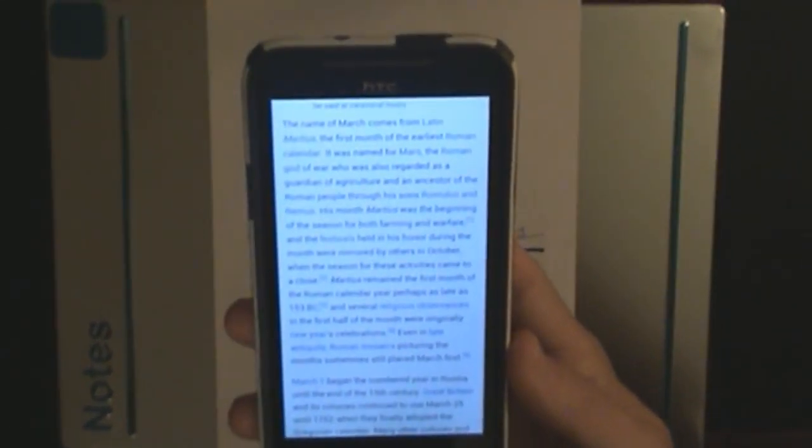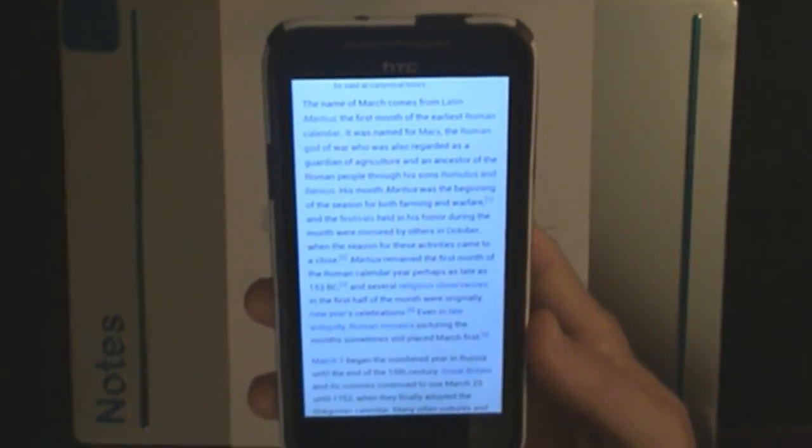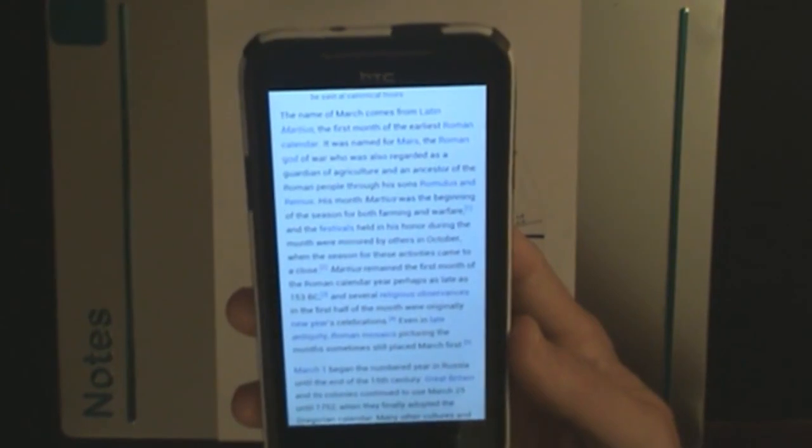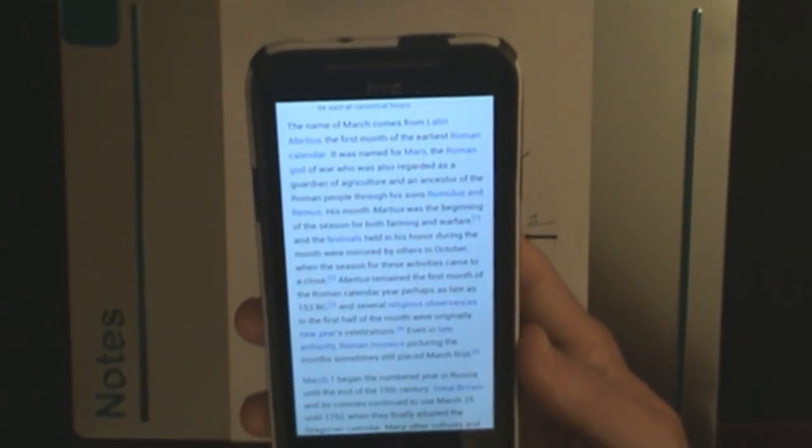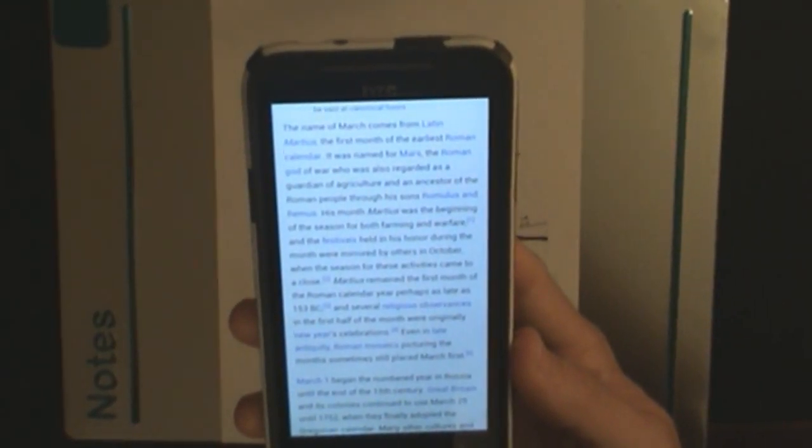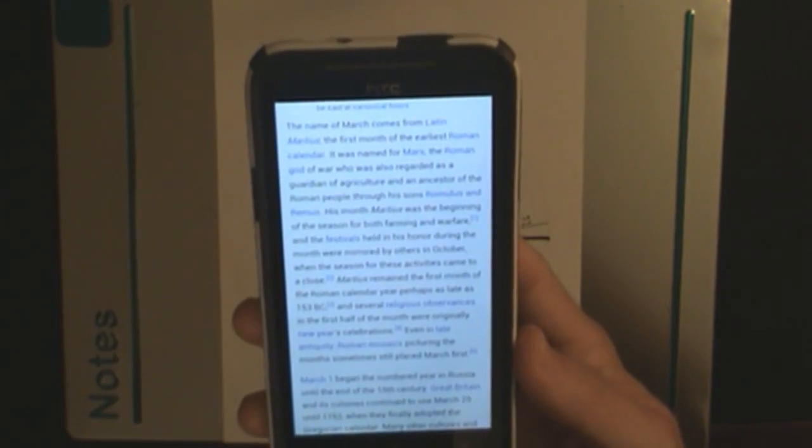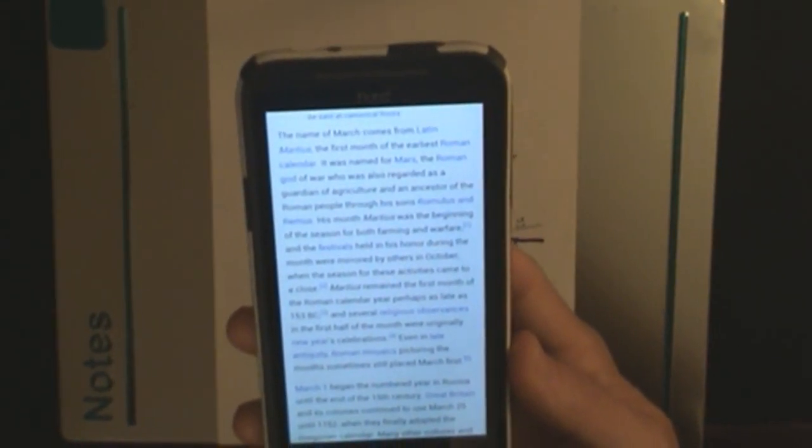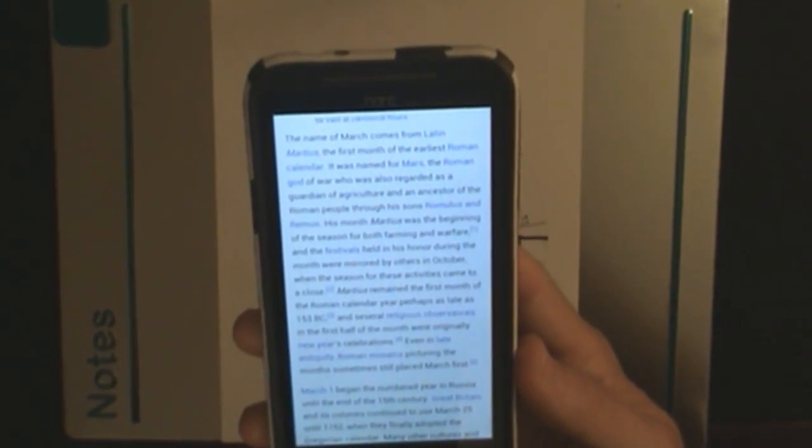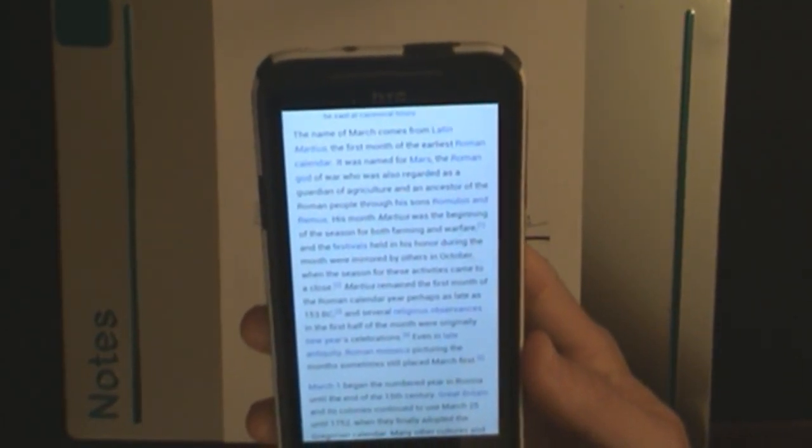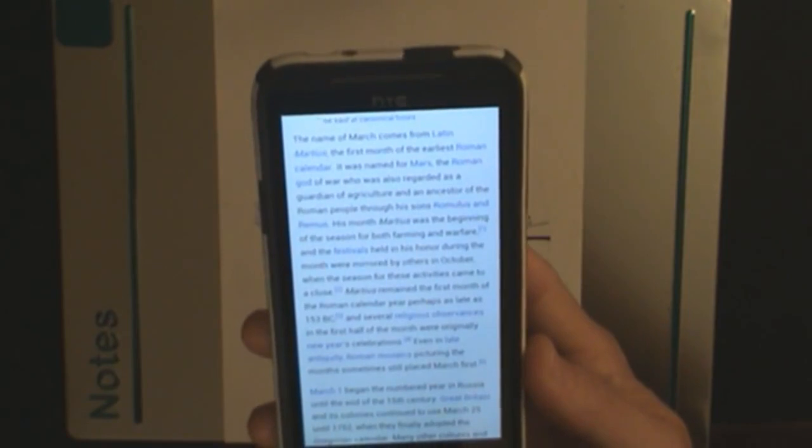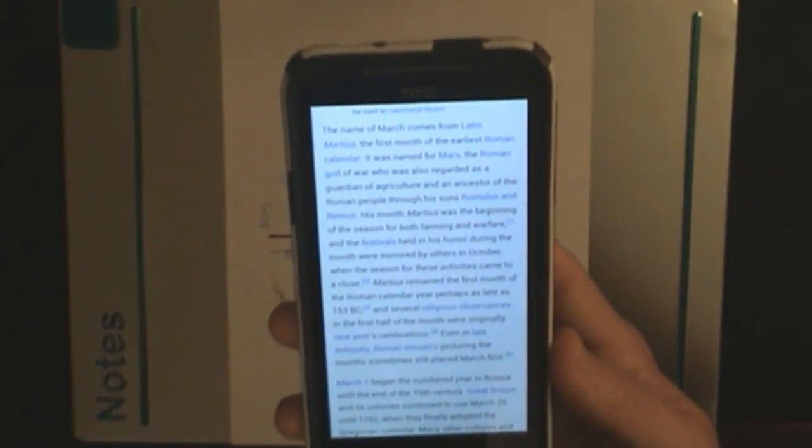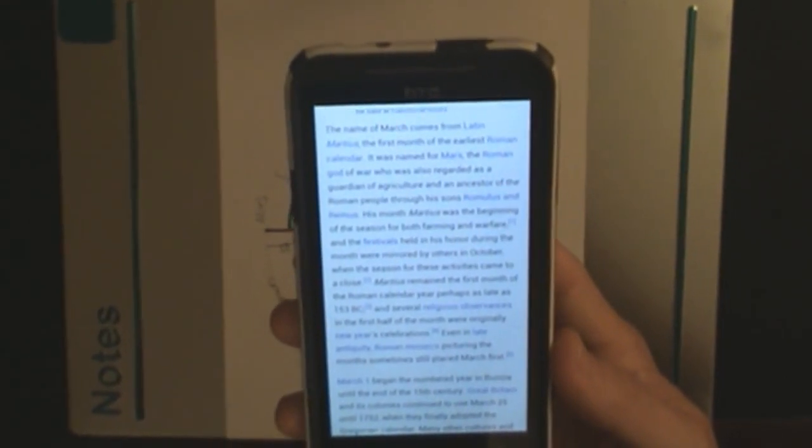I'll read it aloud to you: The name of March comes from the Latin Martius, the first month of the earliest Roman calendar. It was named for Mars, the Roman god of war, who was also regarded as the guardian of agriculture and an ancestor to the Roman people through his sons Romulus and Remus. His month, Martius, was the beginning of the season for both farming and warfare, and the festivals held in his honor during this month were mirrored in October.